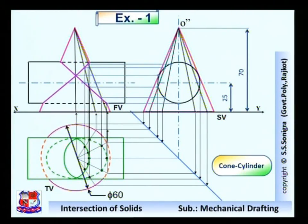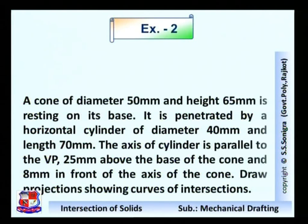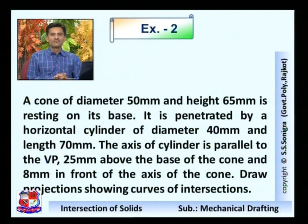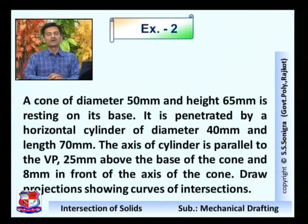I hope the solution is clear to you. Now we continue for the next problem - Problem number two. The data is given like this: a cone of diameter 50 mm and height 65 mm is resting on its base. It is penetrated by a horizontal cylinder of diameter 40 mm and length 70 mm. The axis of the cylinder is parallel to VP, 25 mm above the base of the cone and 8 mm in front of the axis of the cone.